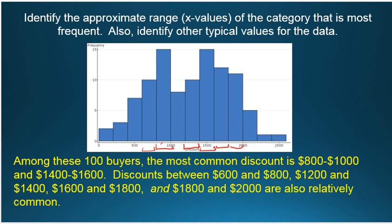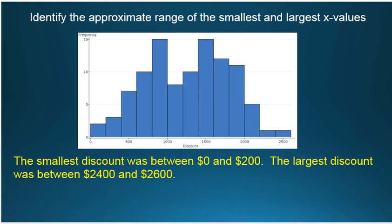So, identify the most common categories, but other common categories. Discounts between 600 and 800, 1,200 and 1,400, 1,600 and 1,800, and 1,800 and 2,000 are also relatively common.